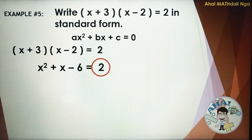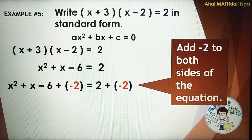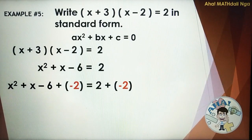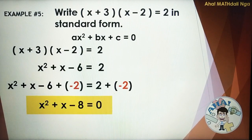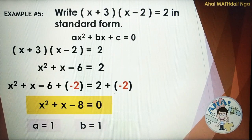Next, we need to make this positive 2 become 0 by adding negative 2 to both sides of the equation. So we have X squared plus X minus 6 plus negative 2 is equal to 2 plus negative 2. Simplifying: X squared plus X minus 8 is equal to 0, because negative 6 plus negative 2 equals negative 8. This is now the equation in standard form. A is equal to positive 1, B is equal to positive 1, and C is equal to negative 8.